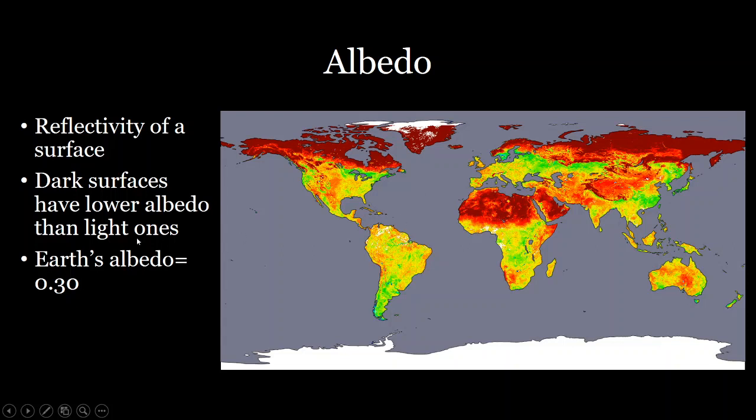And so on average, the earth's albedo is around 0.3, which means that it's absorbing about 70% of the energy that hits it and just reflecting 30% of the energy back into space.